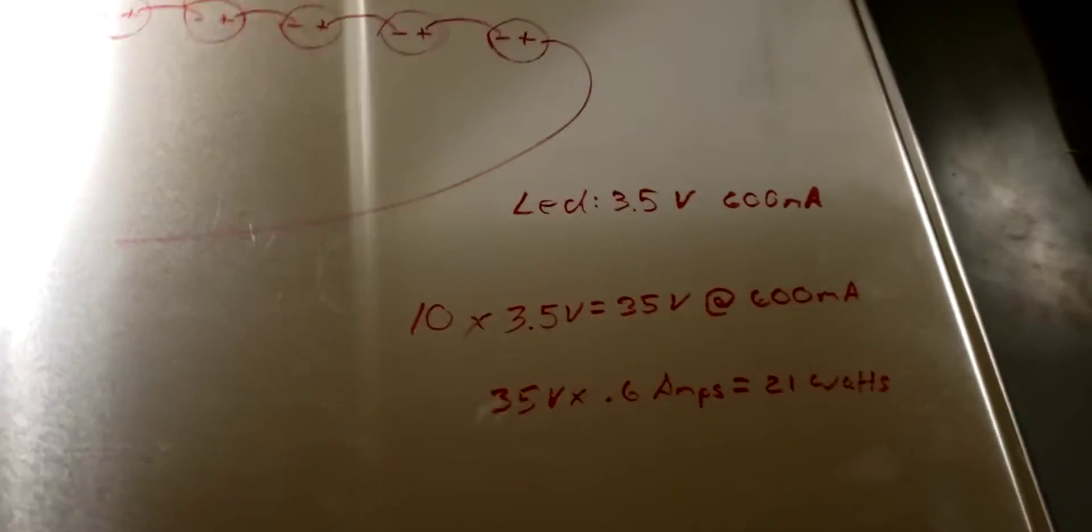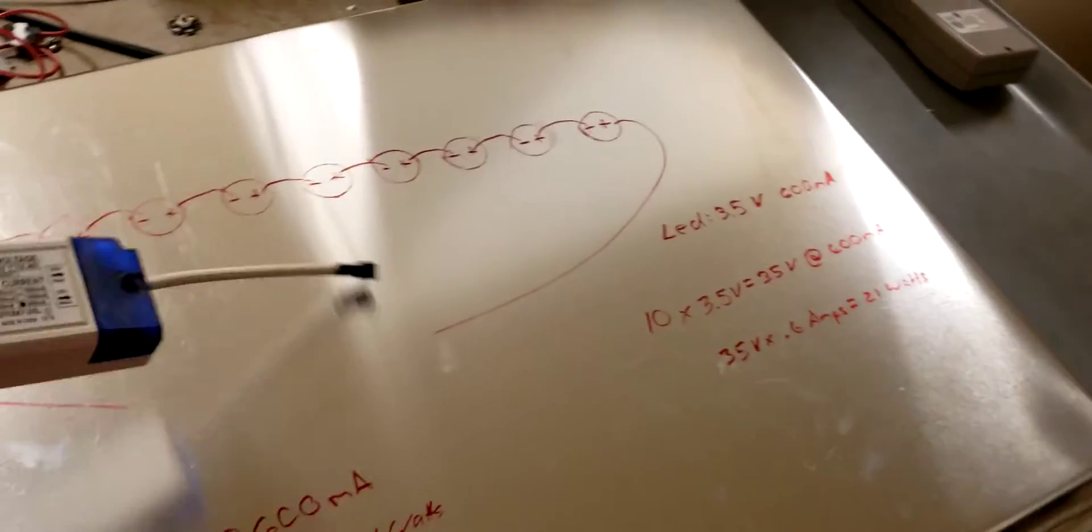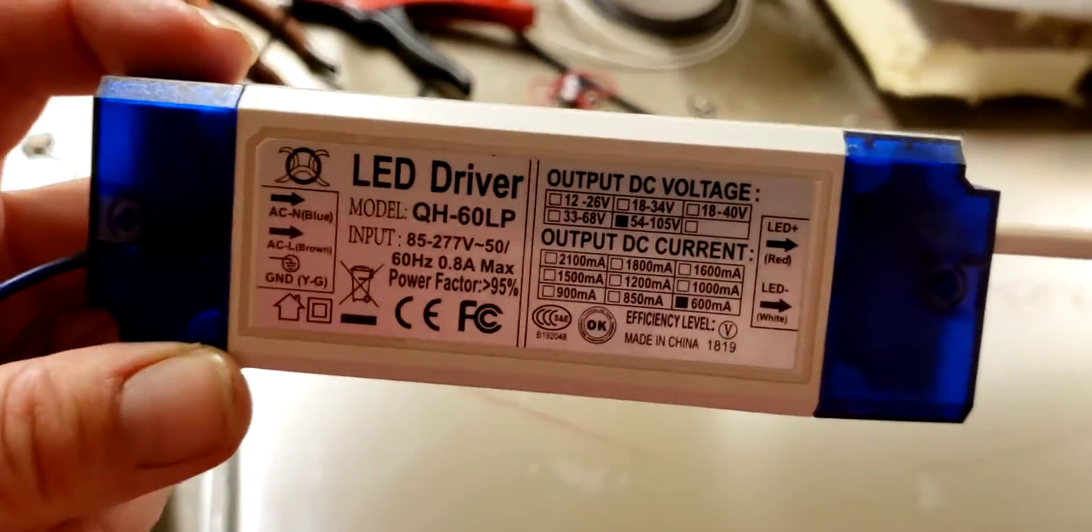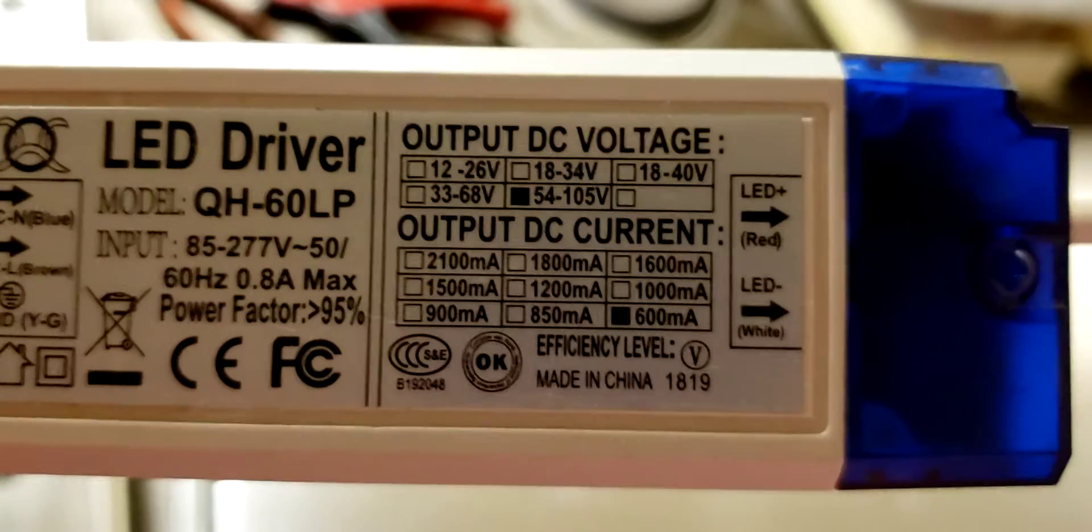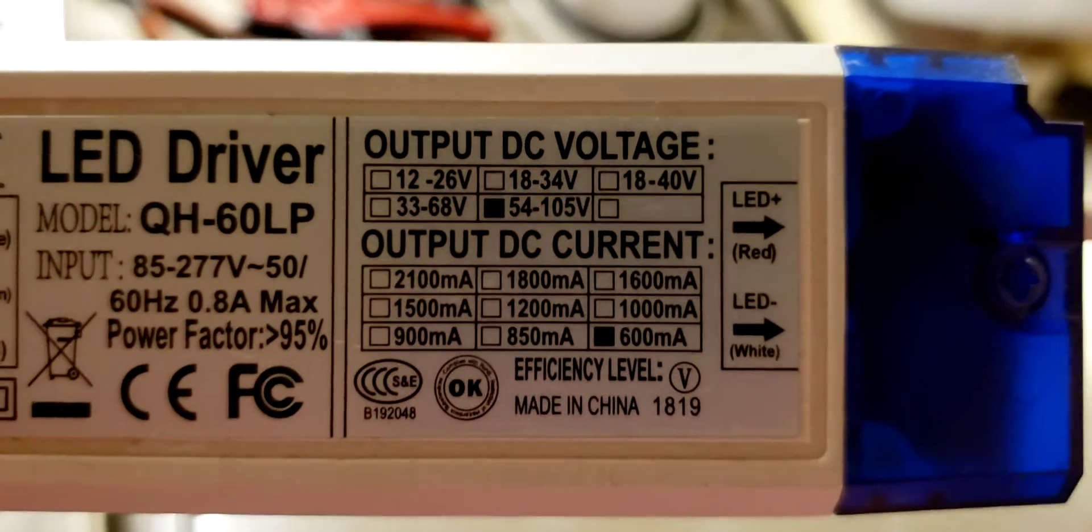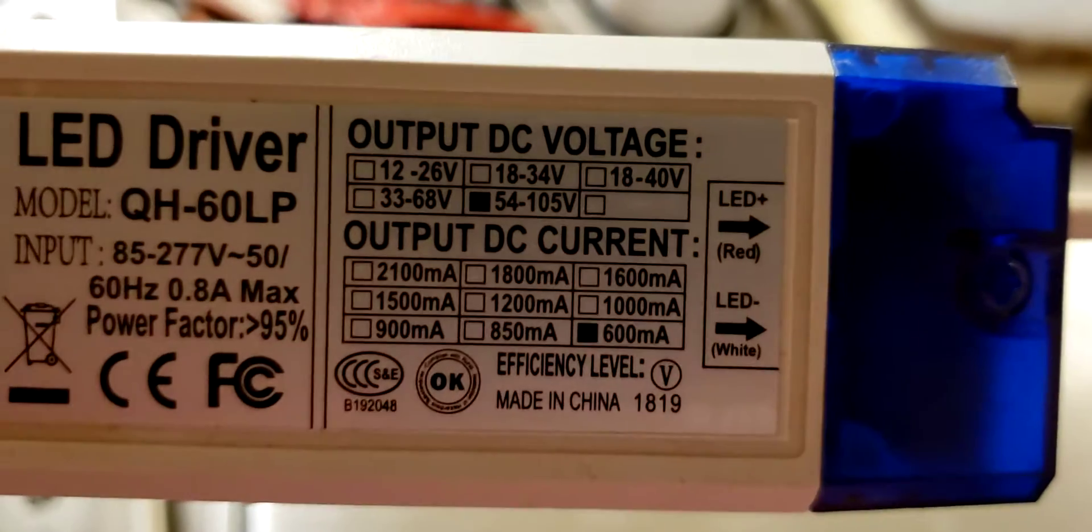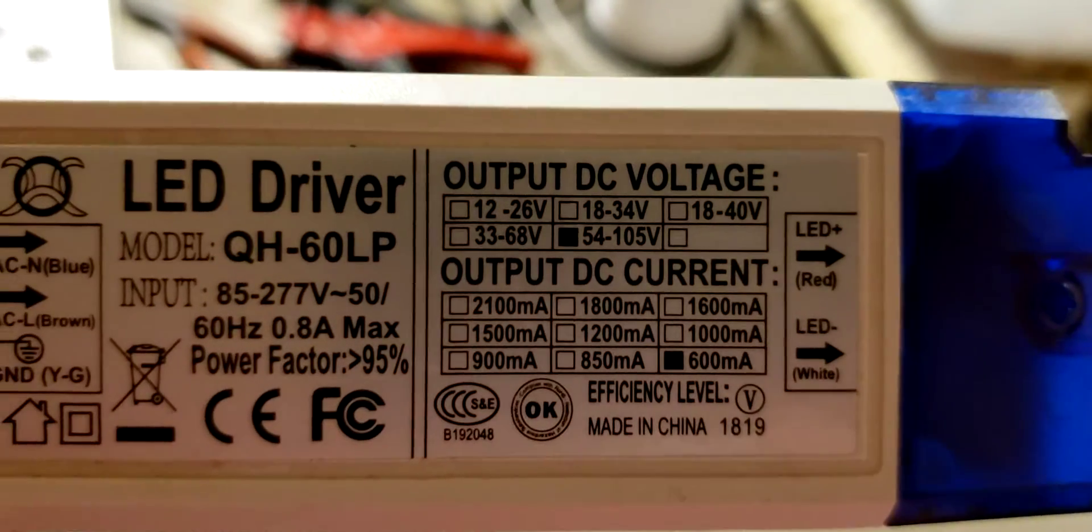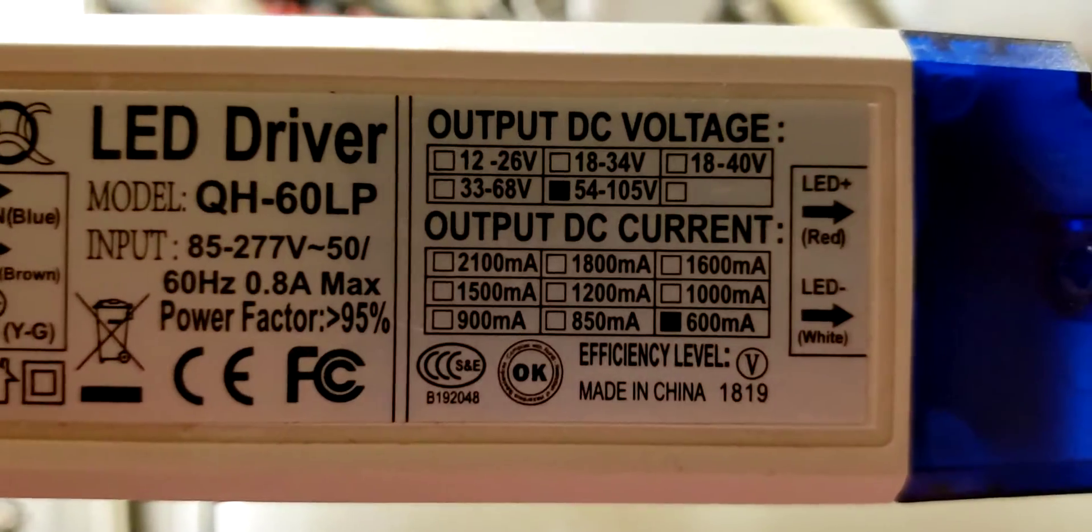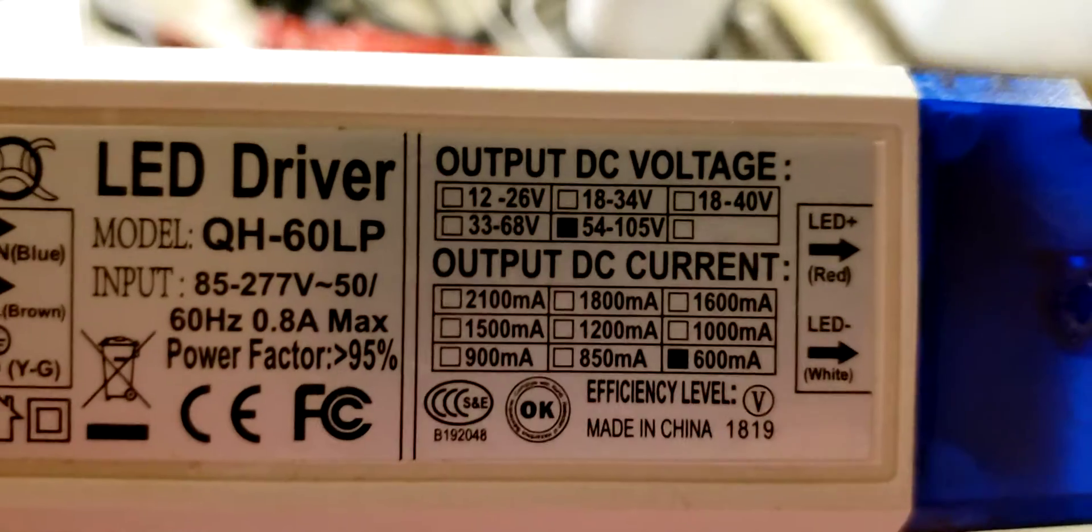So on my circuits I use this driver right here. As you can see, the output voltage is 54 to 105 volts at 600 milliamps. And if you wire in series, the voltage changes but the current always stays the same.